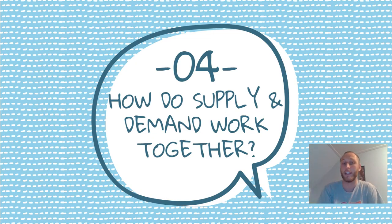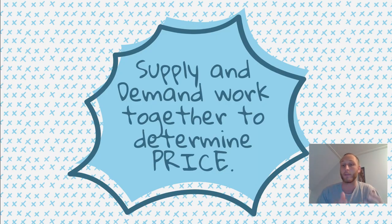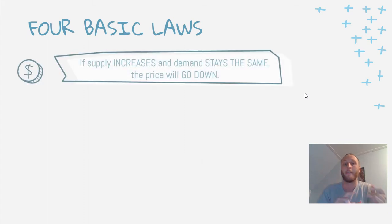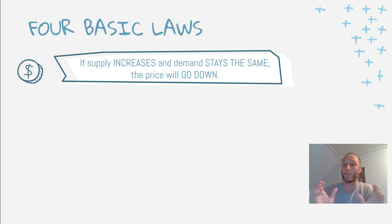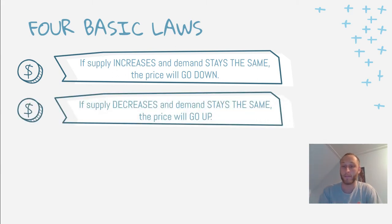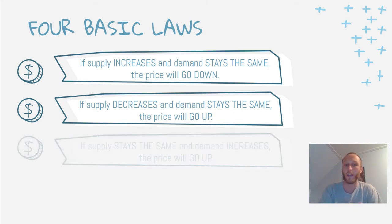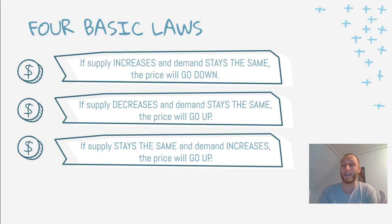So now how do supply and demand work together? They work together to determine the price of products. There are four basic laws. First, if supply increases but demand stays the same, the price will go down because you have extra product. Second, if supply decreases but demand stays the same, the price can go up because you have less supply but people still want it. Third, if supply stays the same but demand increases, the price goes up because people are heavily wanting the product.